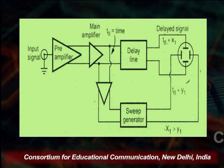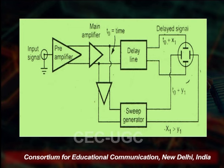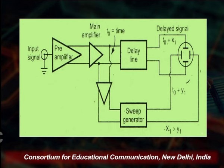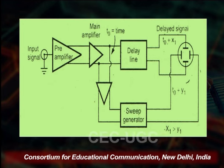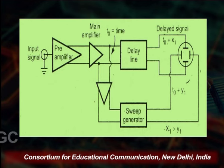Thus the input signal is not applied directly to the vertical plates, but passes through a delay line circuit and is delayed by some time. As seen in the diagram, the input signal goes through the pre-amplifier, then the main amplifier, after which the delay signal is applied. Through the delay line the signal is delayed, then it passes onto the screen.